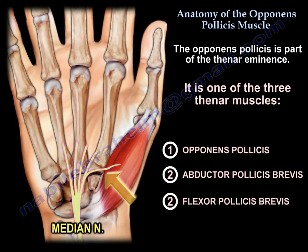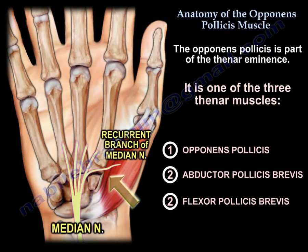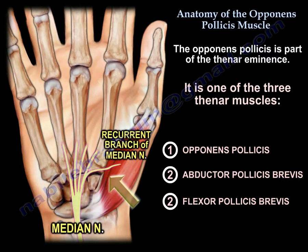Specifically, they are innervated by the recurrent motor branch of the median nerve, except the deep head of the flexor pollicis brevis, which is innervated by the ulnar nerve.